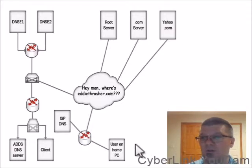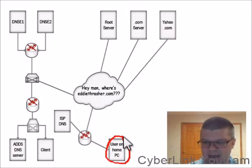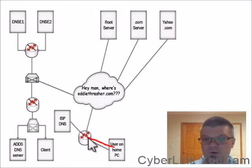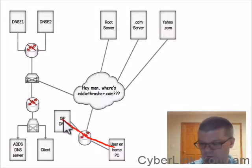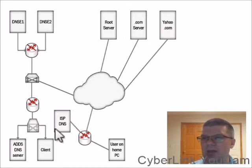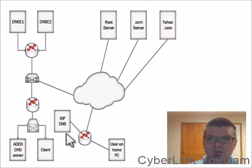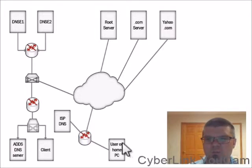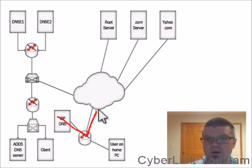A home user types eddythrasher.com into their browser. The machine first checks its cache and finds there are no records. It then sends a query to the router's forwarder. The forwarder then sends a request to the ISP's DNS server. The ISP's DNS server is the resolver. It does the work using recursion, and much like the earlier example, it does not communicate with the home PC until it gets an answer.